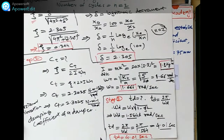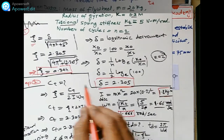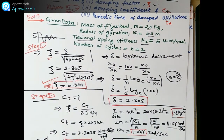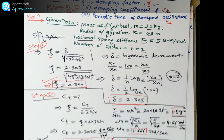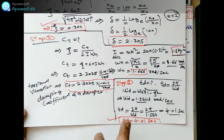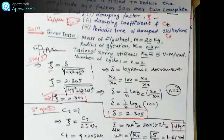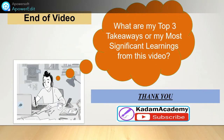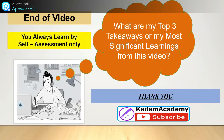To summarize: we calculated the damping factor ζ = 0.344, the torsional damping coefficient c_τ = 0.3025 N·m·s/rad, and the damped periodic time T_d = 4.01 seconds. Friends, please subscribe to Katham Academy. Write down the three outcomes of this video on the mathematical modeling of vibrating systems and learn by self-assessment.